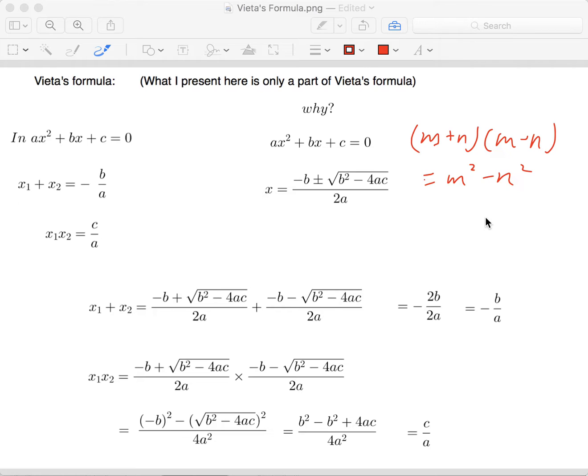First, what is Vieta's formula? Vieta's formula states that in the quadratic equation ax squared plus bx plus c equals zero, x1 plus x2, where x1 and x2 are the two roots of this equation, equals negative b over a. If they multiply together, x1 times x2 equals c over a.